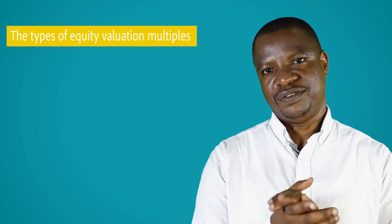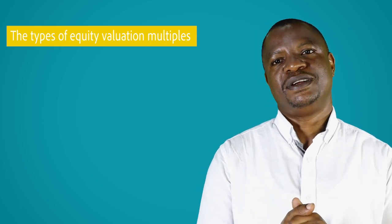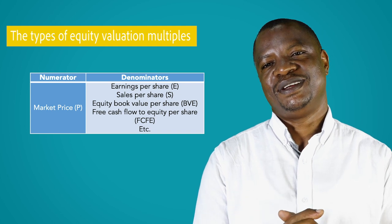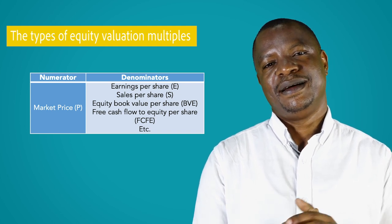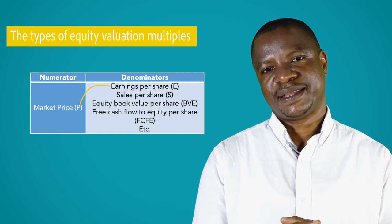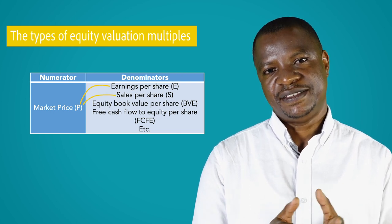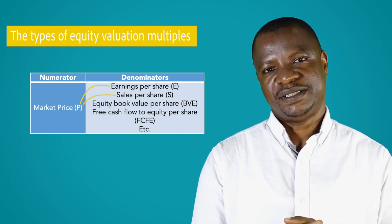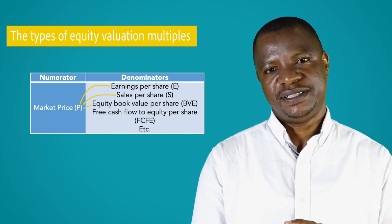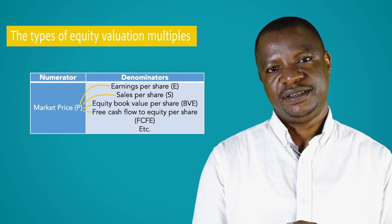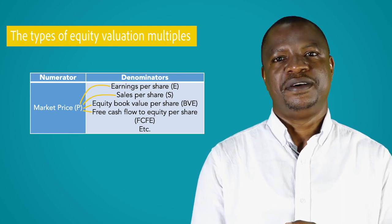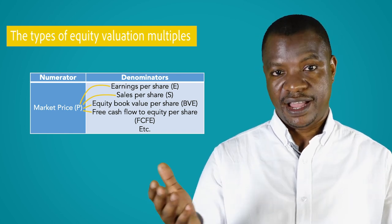What are the types of equity valuation multiples? There are several types, such as PE — that is the price to earnings per share; PS — that is the price to sales per share; PB — that is the price to book value per share; and PFCFE — that is the price to free cash flow per share, and so on.